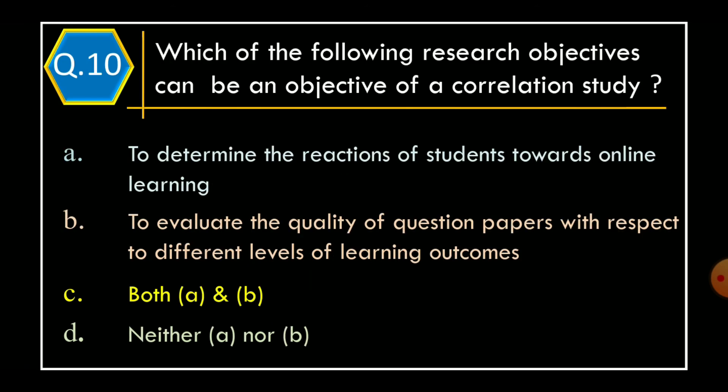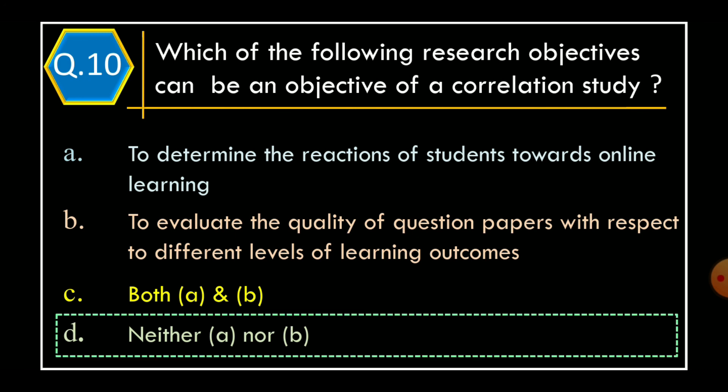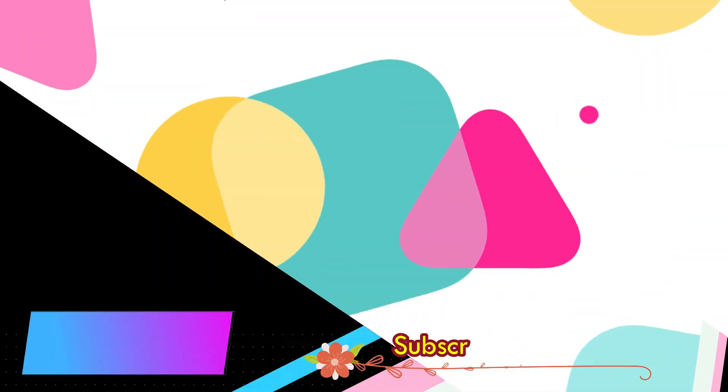Question 10. Which of the following research objectives can be an objective of a correlation study? Option A, to determine the reactions of students to online learning; Option B, to evaluate the quality of question papers with respect to different levels of learning outcomes; Option C, both Option A and B; Option D, neither Option A nor Option B. The correct option is Option D, neither Option A nor Option B.